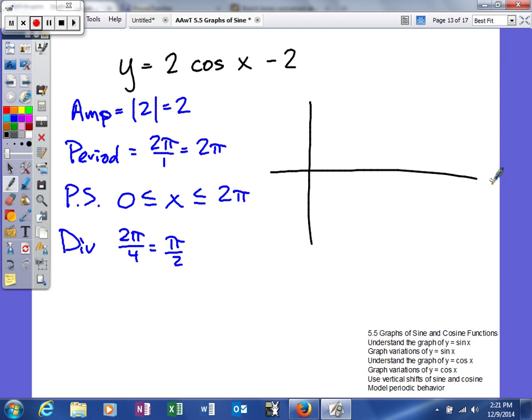So we get something that would look like this. When we graph the original function, we'll label our x-axis: 0, π/2, π, 3π/2, and then 2π.